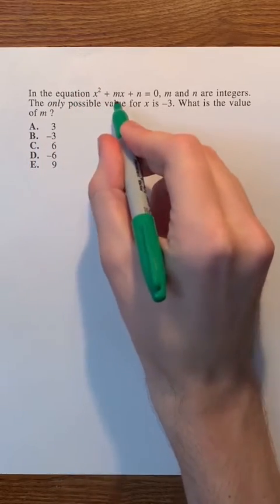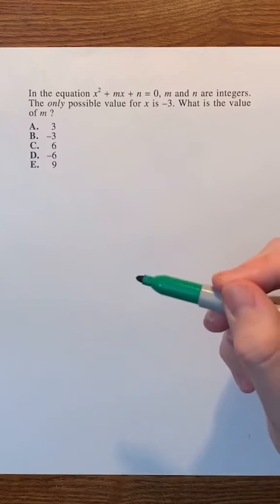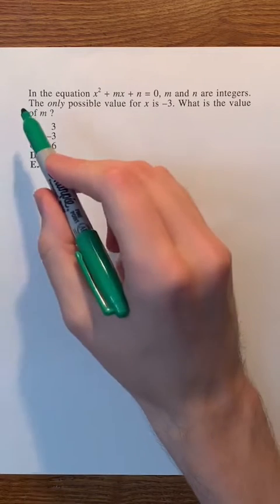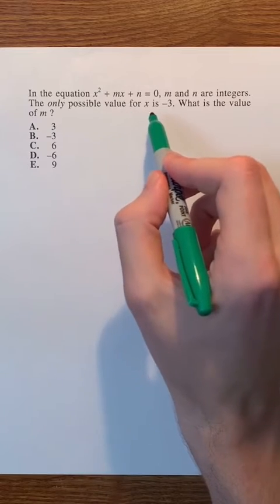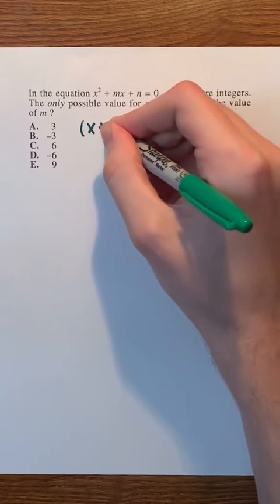The highest degree in this equation is 2, so it must be a quadratic equation. Therefore, it must have two factors. Because the only possible value for x is negative 3, the two factors are going to be the same. So they'll both be (x + 3).